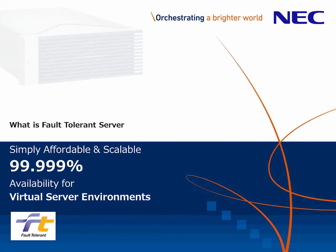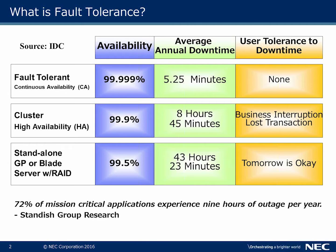Fault tolerance server provides five nines of high availability for virtual server environments. Starting from the bottom, when you look at a general purpose server or blade server with RAID, the availability is 99.5%. A lot of people don't realize that actually equates to 43 hours and 23 minutes of annual downtime — meaning it's okay for that application to be unavailable tomorrow.